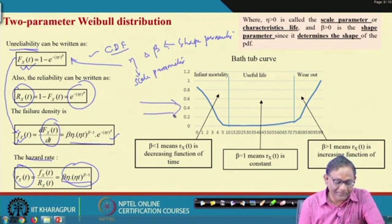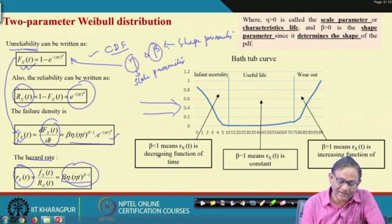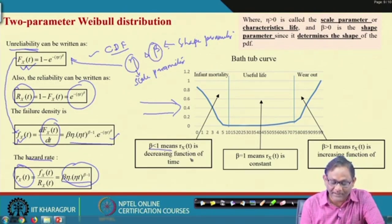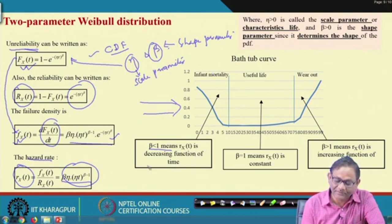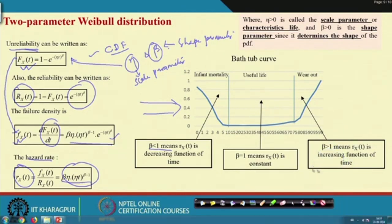Now suppose you have data and have computed eta and beta. If your beta value is less than 1, it means you are in the infant mortality region — the hazard rate is a decreasing function of time. If beta equals 1, it represents the useful life phase with a constant hazard rate. When beta is greater than 1, it is the worn-out or burn-out phase. So knowing beta tells you under which phase the component is operating.